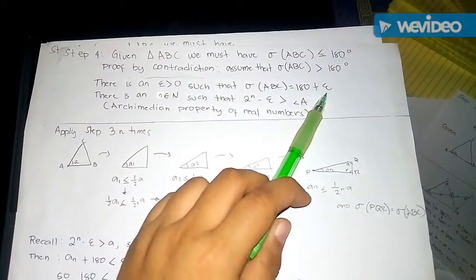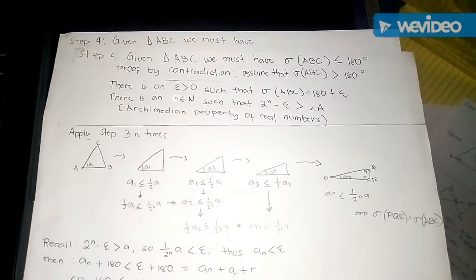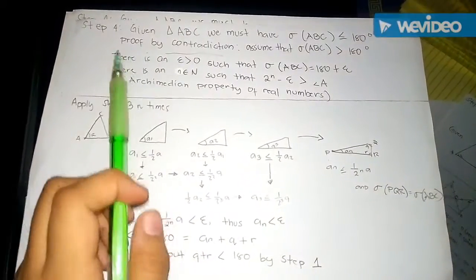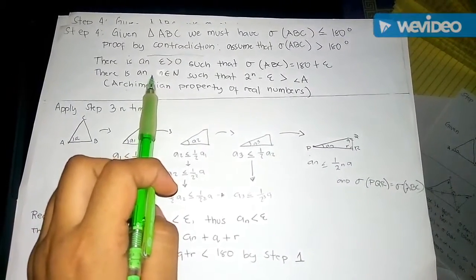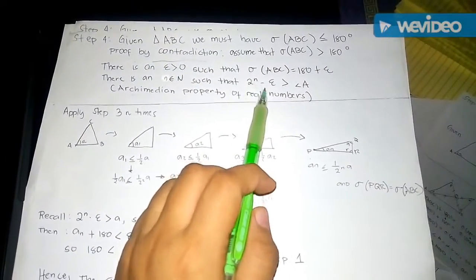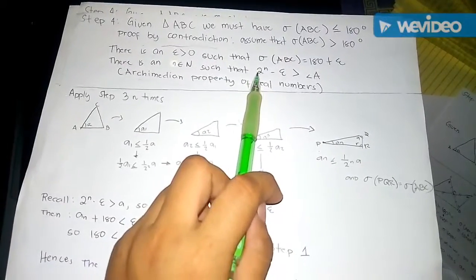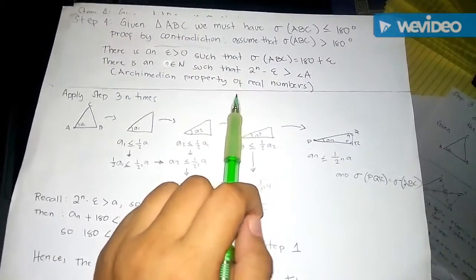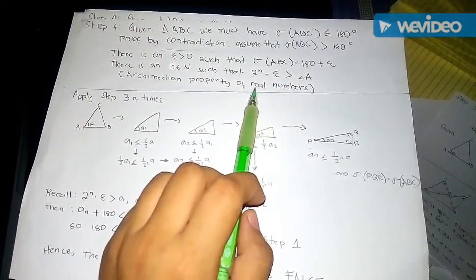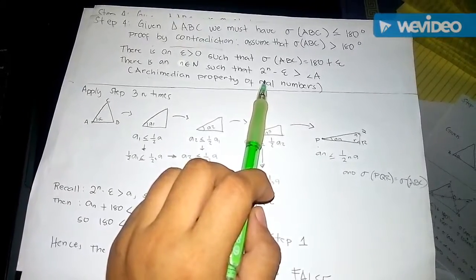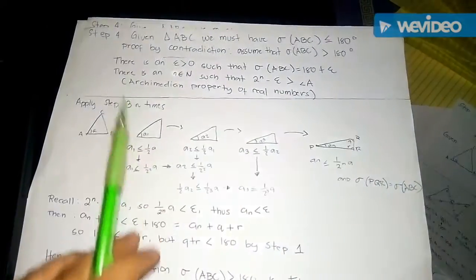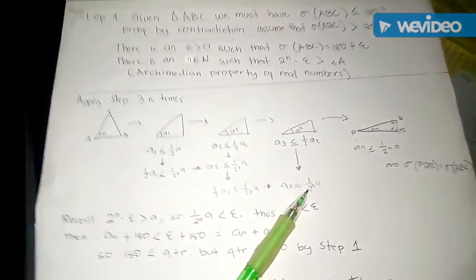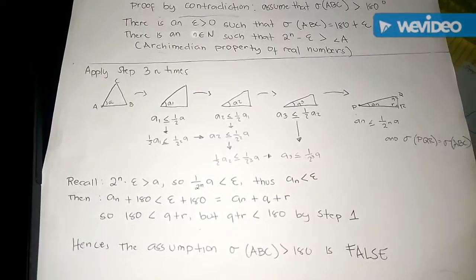If the angle sum is greater than 180 degrees, there must be some number ε such that the angle sum equals 180 + ε, where ε represents the excess above 180 degrees. The next fact we need is the Archimedean property of real numbers, which states that for any small number ε and any fixed number — here the angle at A — there exists a large enough power of 2, say 2ⁿ, such that 2ⁿ · ε is greater than angle A.